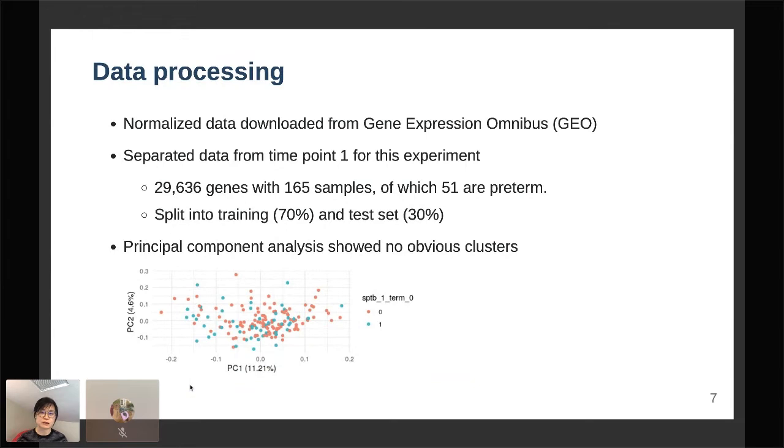This accounts for close to 30,000 genes with only 165 samples, and about one-third of them are preterm. I split it into training and test set at a 70-30 ratio. I quickly did a principal component analysis to see whether there's outliers that I need to pull out or whether there's obvious batch effects, and there doesn't seem to be any. The colors represent the preterm and full-term mothers.